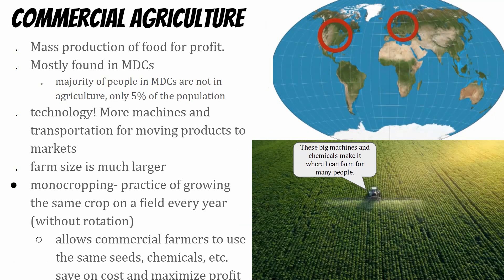The opposite of subsistence is commercial agriculture, typically done in MDCs. These are in higher latitudes — Europe, North America, and other parts of the world. Commercial agriculture is mass production for profit. You're probably not consuming what you're growing, and you're doing monocropping — focusing on one crop — and using a lot of machinery. A tractor spraying fertilizer, pesticide, or herbicide allows one farmer to farm for thousands of people.